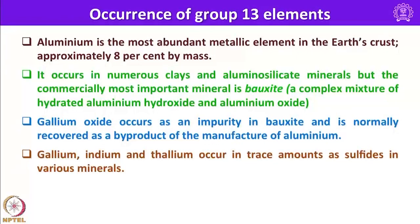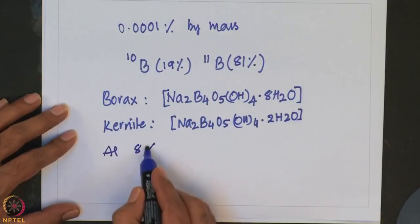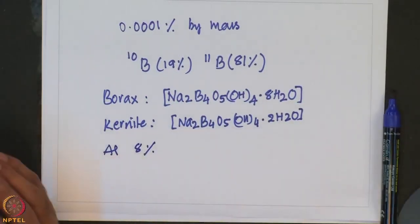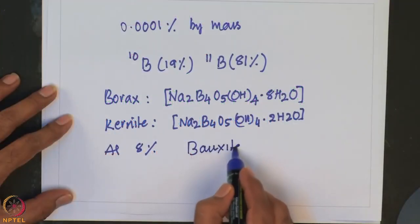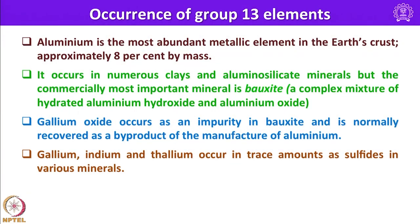Aluminum is the most abundant element in the earth's crust, approximately it accounts for 8 percent by mass. It occurs in numerous clays and aluminosilicate minerals but the commercially most important mineral is bauxite. It is a complex mixture of hydrated aluminum hydroxide and aluminum oxide. In case of gallium, gallium oxide occurs as an impurity in bauxite and is normally recovered as a byproduct of the manufacture of aluminum. When you are processing and extracting aluminum from bauxite essentially more and more gallium oxide will be concentrated and using an appropriate metallurgical process gallium oxide can be reduced to gallium.